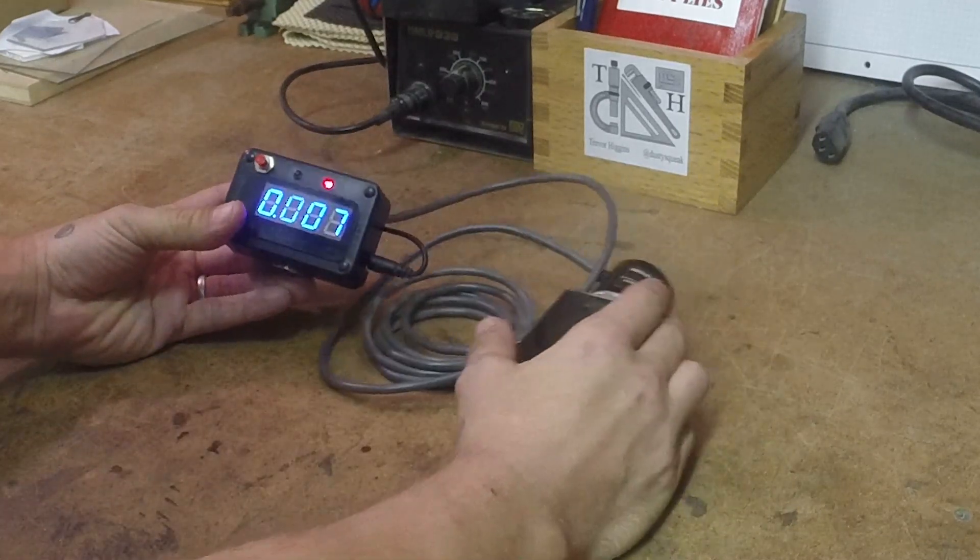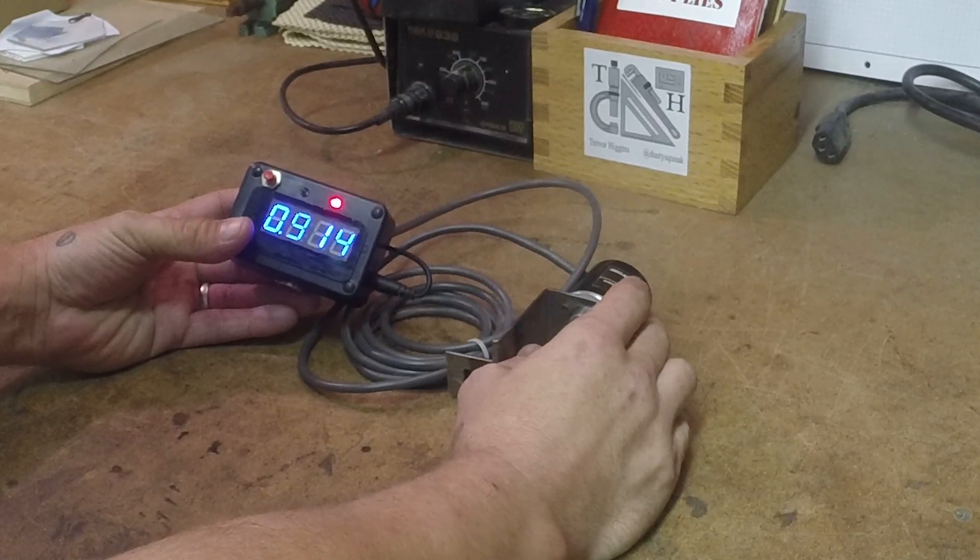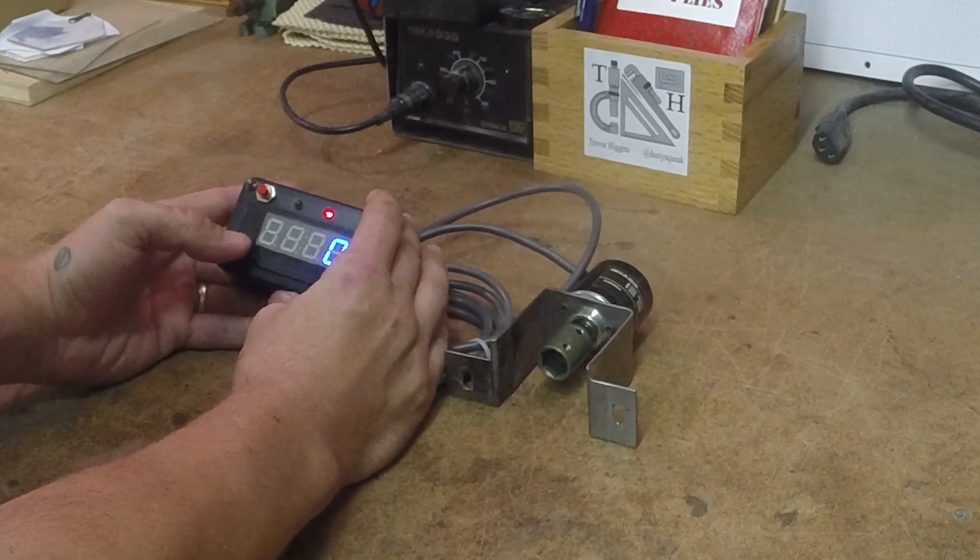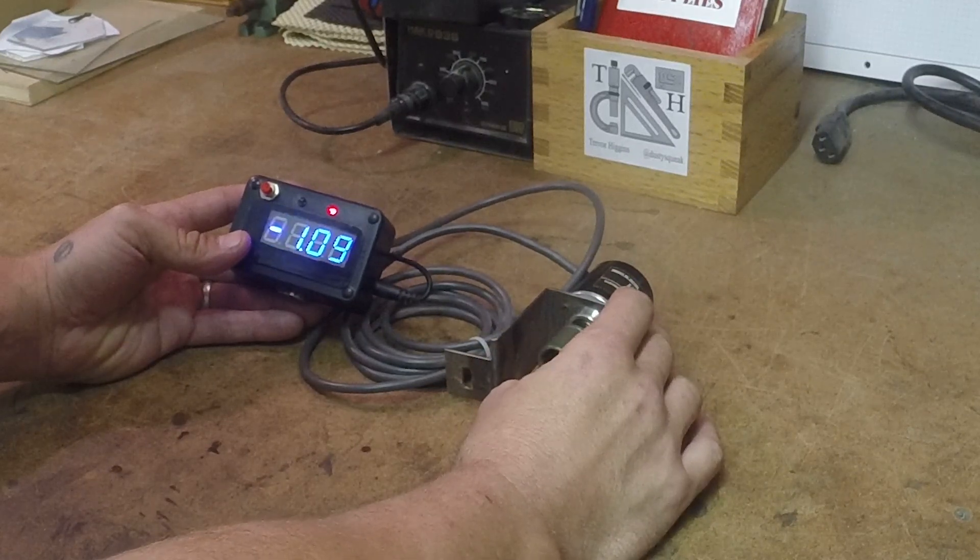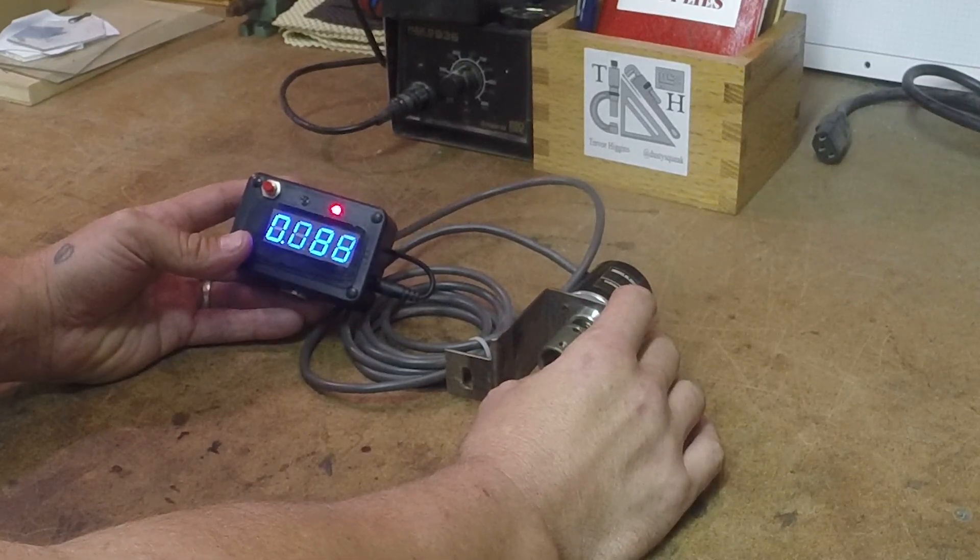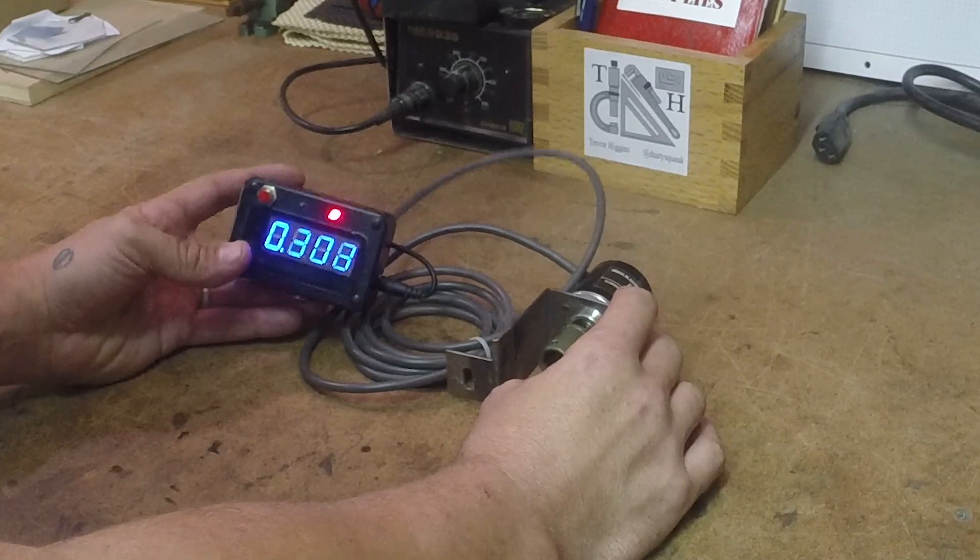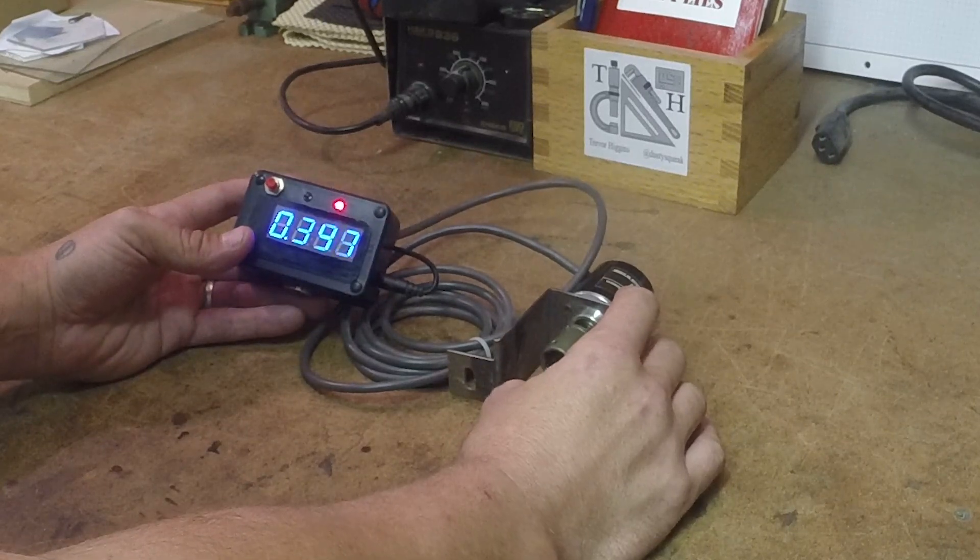And you put the bit in, you lower it to where the bit touches the workpiece, you zero it out, and then you raise it back up and begin cutting and it'll tell you within two thou how deep your cut is. Pretty simple.